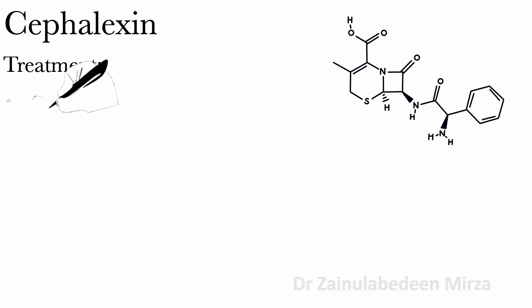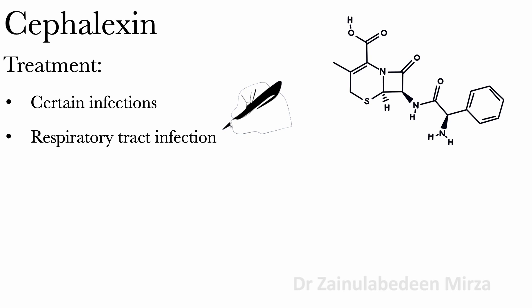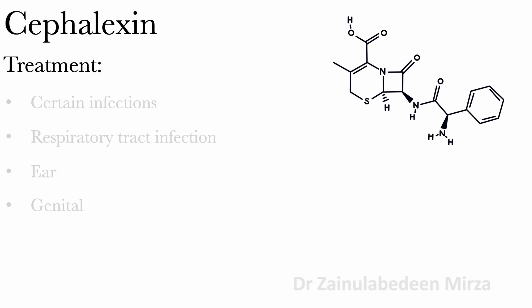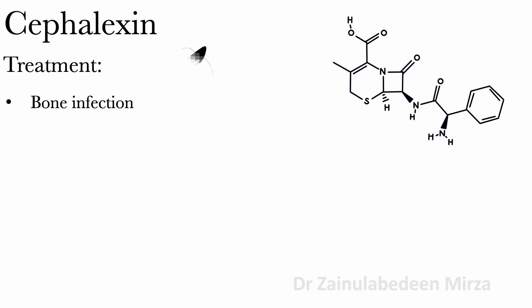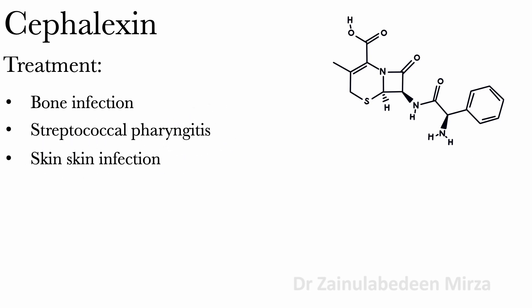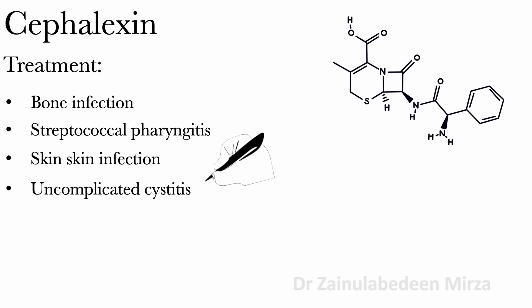Sivalexin treats certain infections such as pneumonia and other respiratory tract infections, ear, and others. Sivalexin is also used to treat bone infections, streptococcal pharyngitis, skin infections, and uncomplicated cystitis.